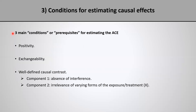So, what are the assumptions that we need? We need three main conditions, or prerequisites, or assumptions for estimating the average causal effect, which is the quantity we are interested in in this course. One of them is positivity, the second one is exchangeability, and the third one is what I call the well-defined causal contrast, which has two components: absence of interference and irrelevance of varying forms of the exposure.